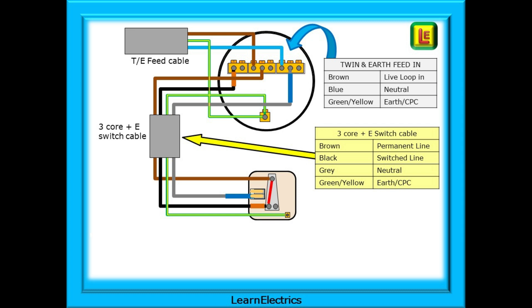For the switch wire, brown is the permanent line. Black is the switched line and marked with brown sleeving, whilst the grey is used as the neutral and marked with blue sleeving. The bare earth or CPC should be sleeved green and yellow throughout its exposed length.